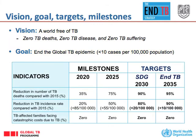The indicators are shown at the bottom and we are talking about major reductions: by 2035, a 95% reduction of deaths and a 90% reduction of incidence.